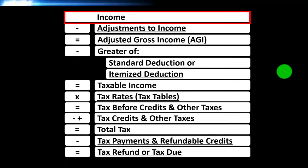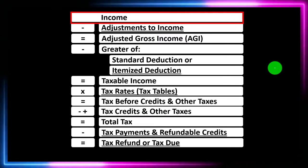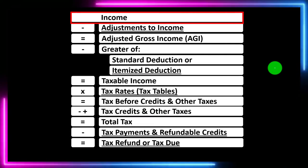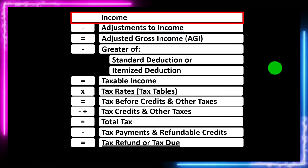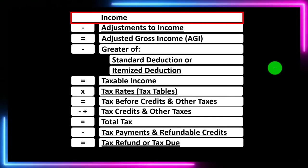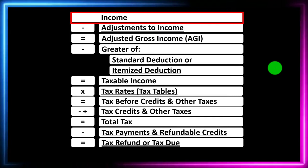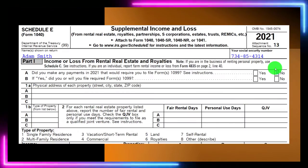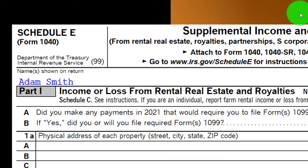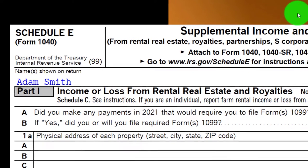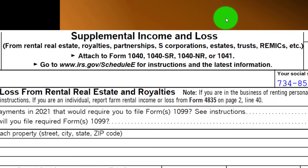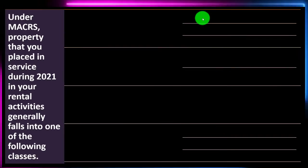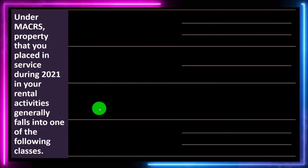Expenses are basically deductions. The net then rolls into Line 1 Income of the Income Tax Formula, as well as eventually page 1 of the Form 1040. This is the Schedule E — basically the income statement schedule, the supplemental income and loss. We're focused on the rental real estate, and we're continuing our discussion of depreciation.